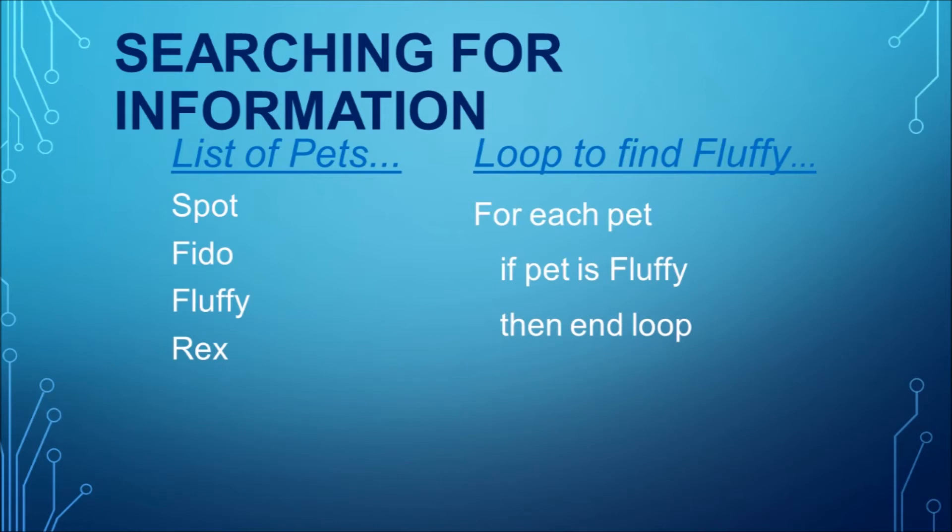In this example, we would set a loop to iterate through every item until we found the one that we wanted. Once the answer we wanted was found, in this case a pet by the name of fluffy, then the loop would stop and the leftover items in the list would not have to be checked.